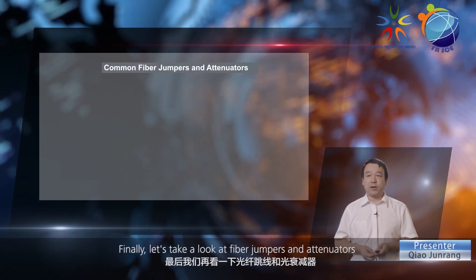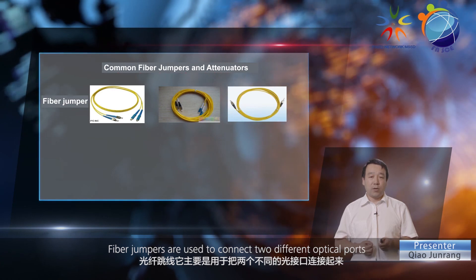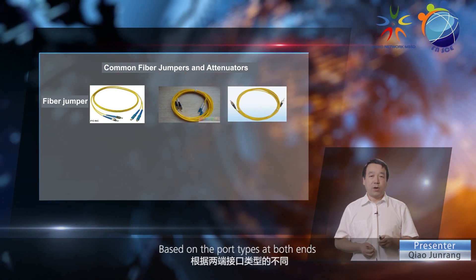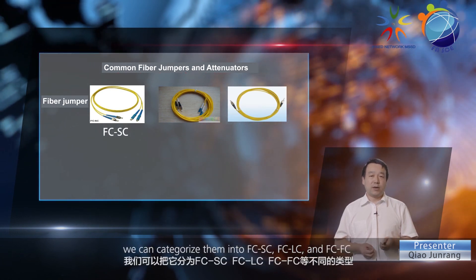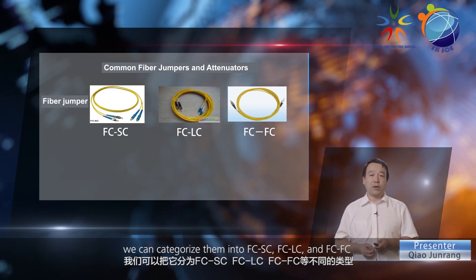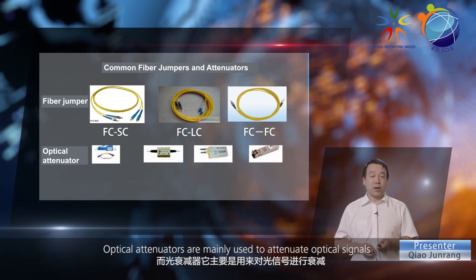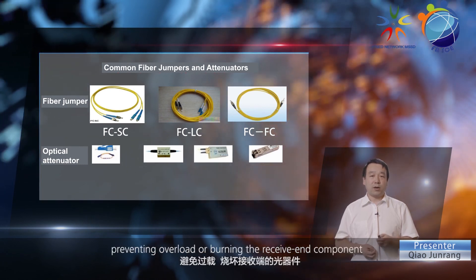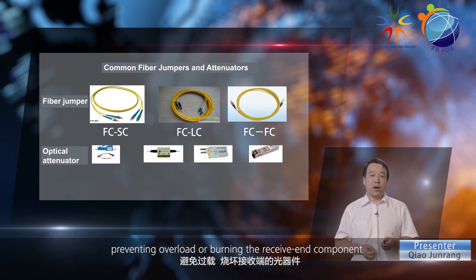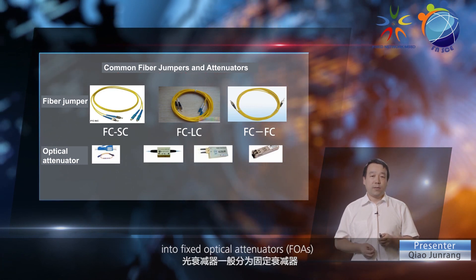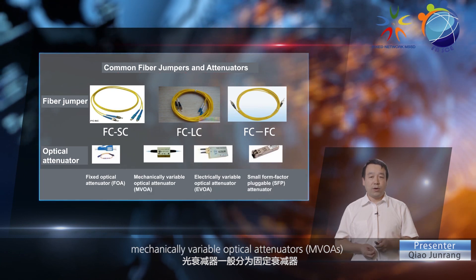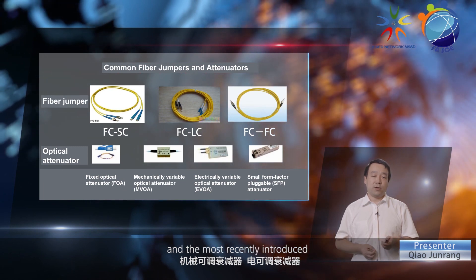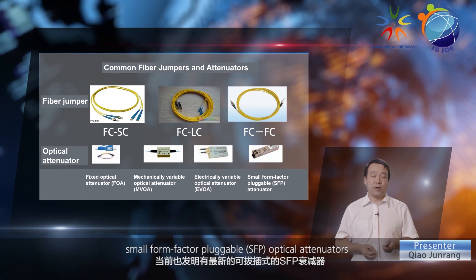Finally, let's take a look at fiber jumpers and attenuators. Fiber jumpers are used to connect two different optical ports and usually have two ends. Based on the port types at both ends, we can categorize them into FC-SC, FC-LC, and FC-FC. Optical attenuators are mainly used to attenuate optical signals so that the optical power is within the allowed range of the receive-end component, preventing overload or burning the receive-end component. Optical attenuators can be classified into fixed optical attenuators, mechanically variable optical attenuators, electrically variable optical attenuators, and the most recently introduced small form factor pluggable optical attenuators.